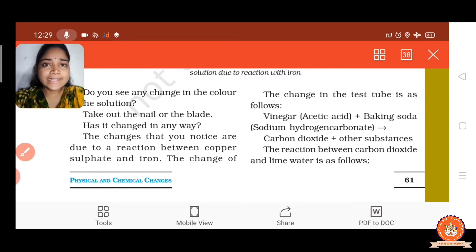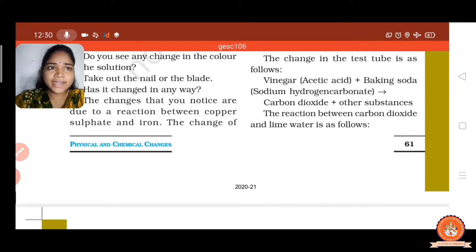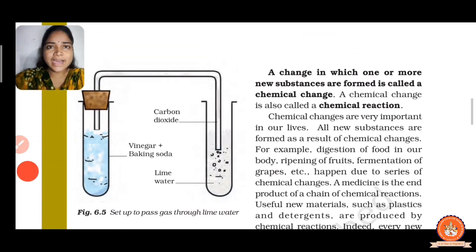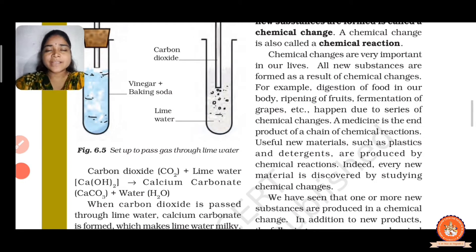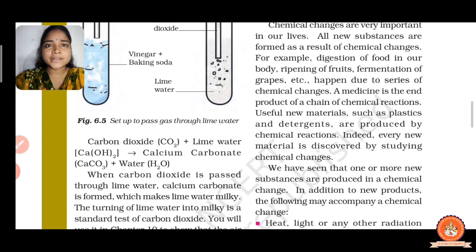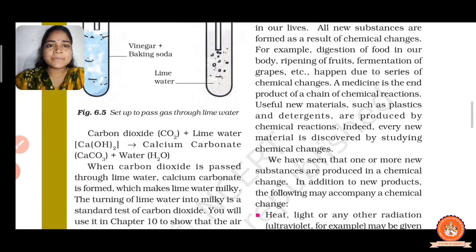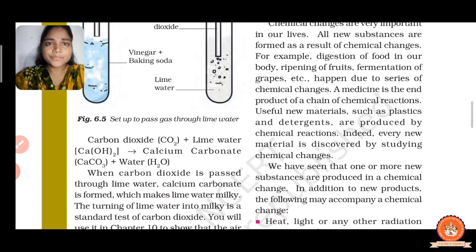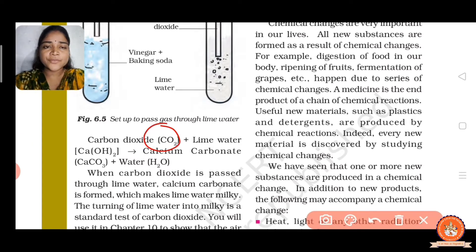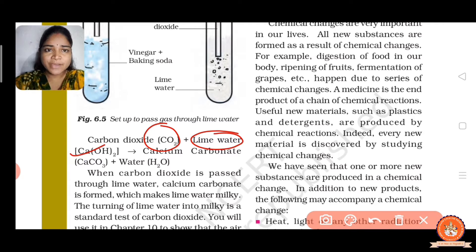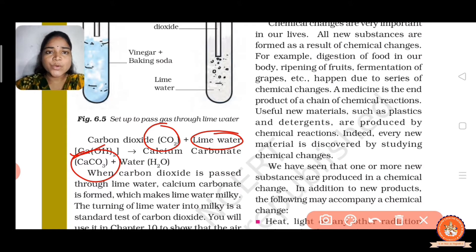Now let us see the reaction between carbon dioxide and lime water. When bubbles of carbon dioxide are added into freshly prepared lime water, it forms calcium carbonate. The chemical formula of CO2 is added into lime water, and it forms calcium carbonate which is CaCO3.